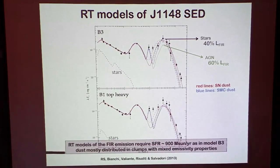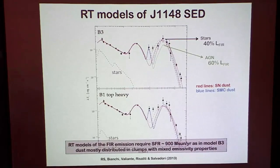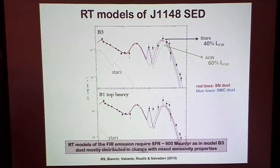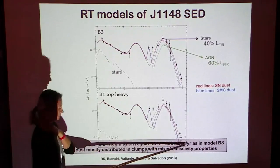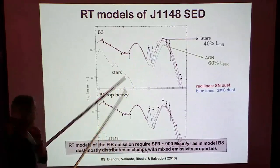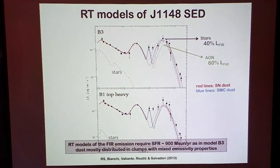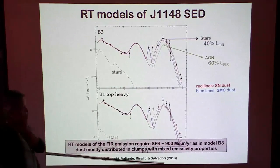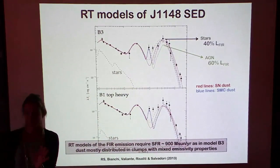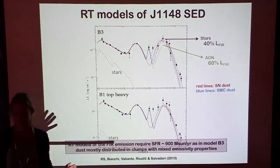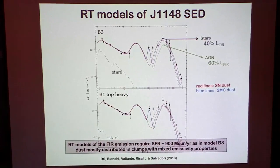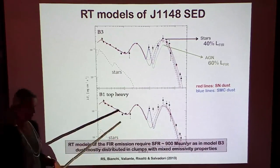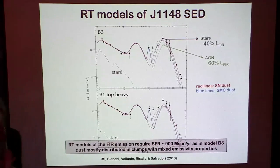The results of comparing models to the observed SED seem to require a star formation rate of at least 900 solar masses per year as predicted by model B3, with dust mostly distributed in clumps with mixed emissivity properties. The fact that the emissivity properties must be a mixture between SMC and supernova-like dust resonates with additional observational evidence for these distant quasars from extinction studies done by Simona Gallerani and collaborators.